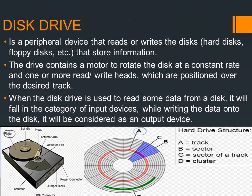Here is the disk drive. It is a device that reads or writes the disk — disk means hard disk, floppy disk, etc. — for the purpose of storing information. In the disk drive there is a motor to rotate the disk, and the function of the motor is to rotate the disk as you see in the picture.